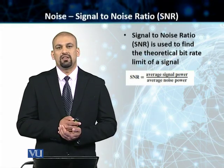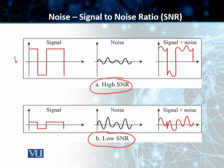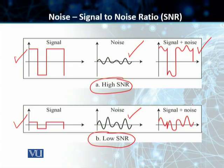Let's go to the slide and discuss these in further detail. As you can see, we have got two cases. One in which we have a high signal-to-noise ratio — the top one — and then there is a second one where we have a low signal-to-noise ratio. The amplitude of the input signal in the first case is higher than the amplitude of the second one. Signal strength is more in the first case. We have noise in both, and what we receive on the receiving end is signal plus noise in each case.